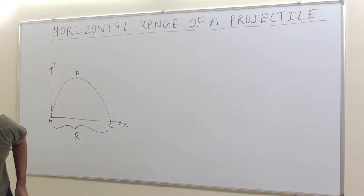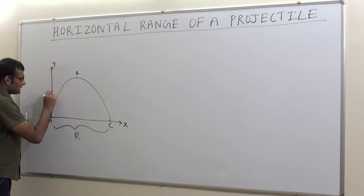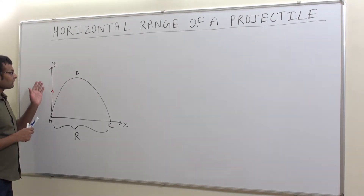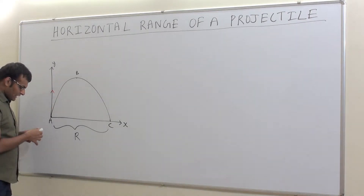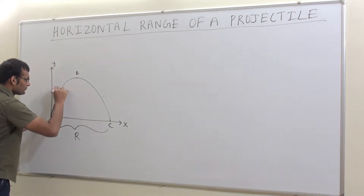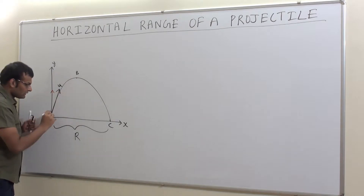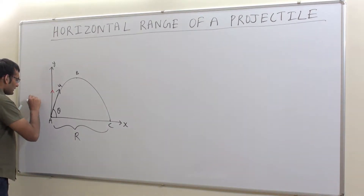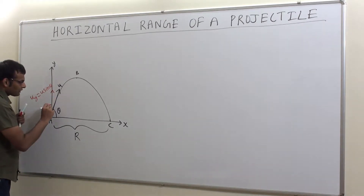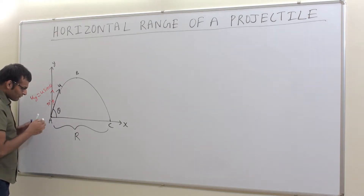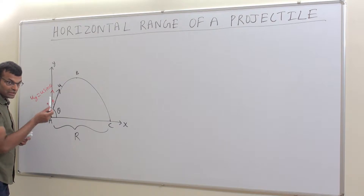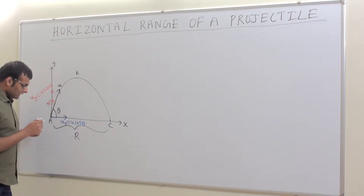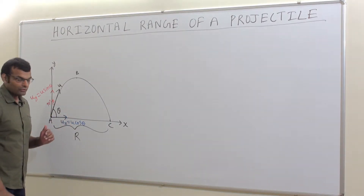The y-axis indicates the vertical component of the velocity of the object thrown in a particular direction. Taking u as the velocity with which it is thrown at an angle theta with the horizontal, the vertical component is uy = u sinθ, because the complementary angle is 90 minus theta. Similarly, the horizontal component of the initial velocity is ux = u cosθ.